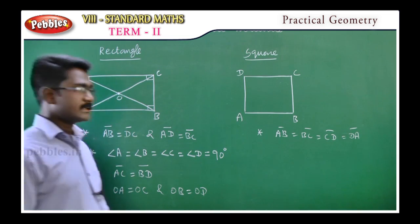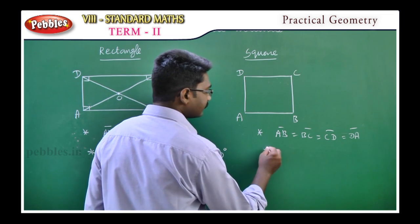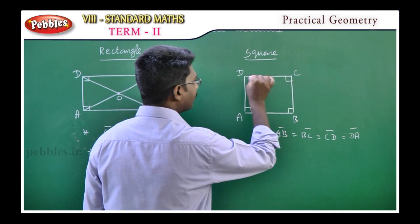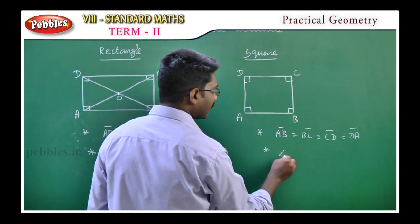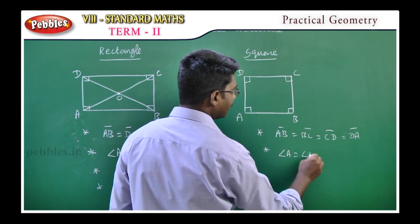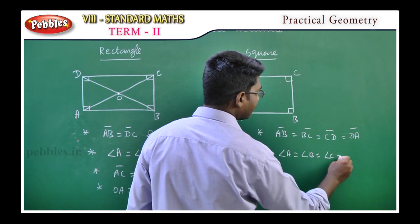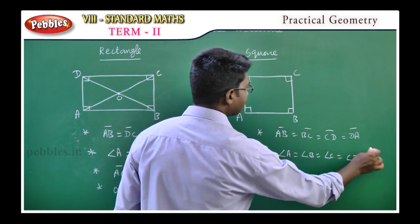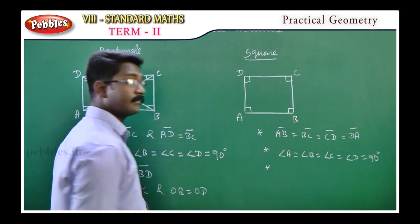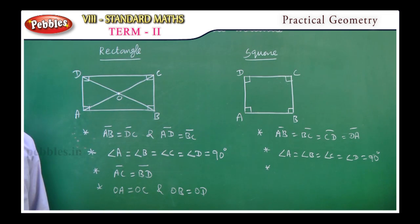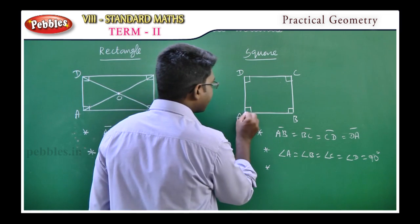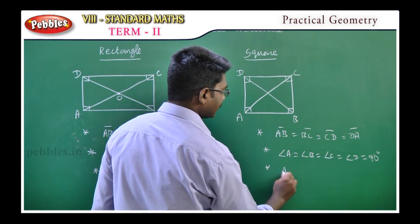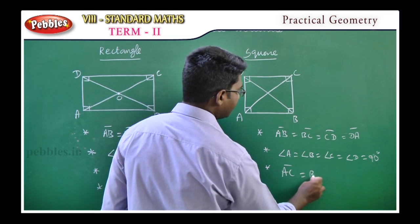Second property is the same as rectangle: each and every angle is 90 degrees. All the angles are equal, and each angle is 90 degrees — angle A equals angle B equals angle C equals angle D equals 90 degrees. Third property: the diagonals are equal — AC equals BD.